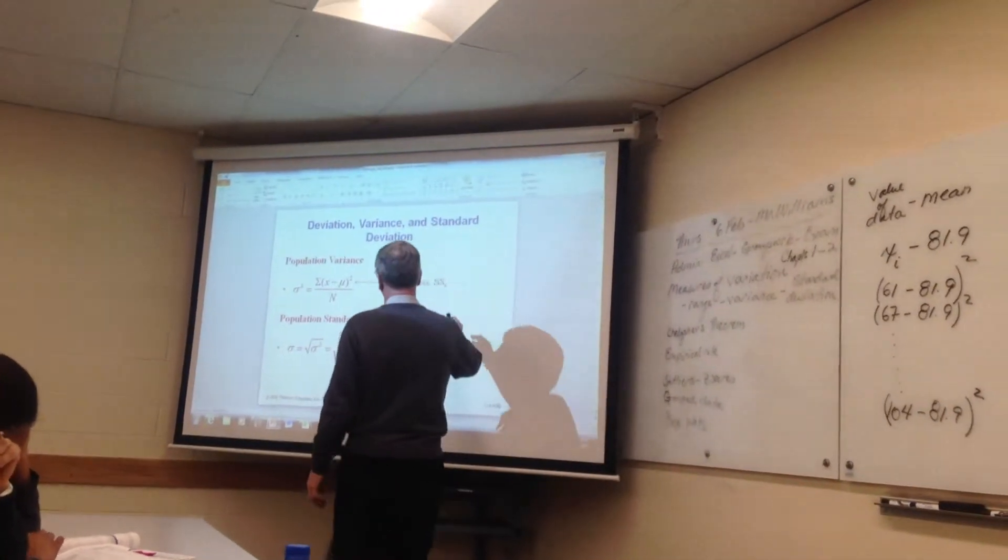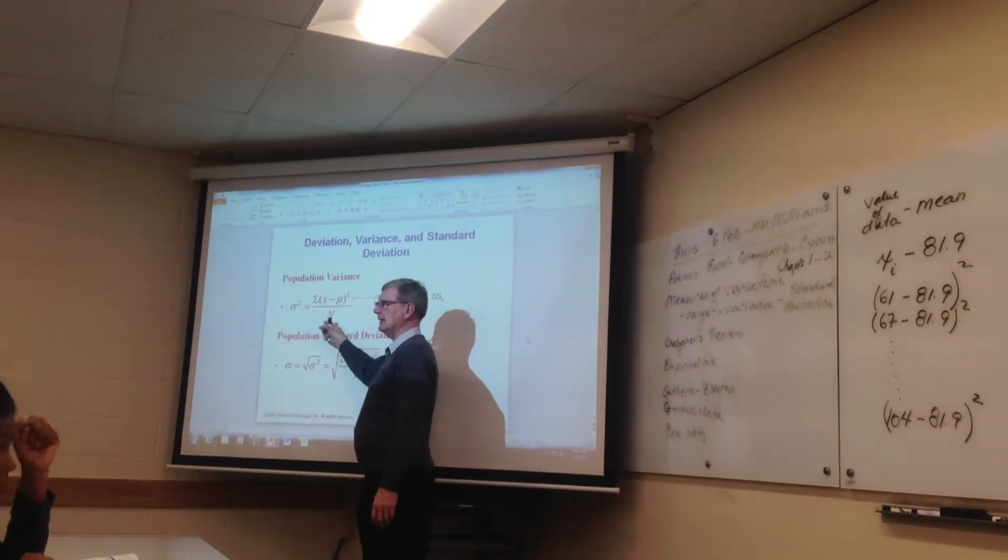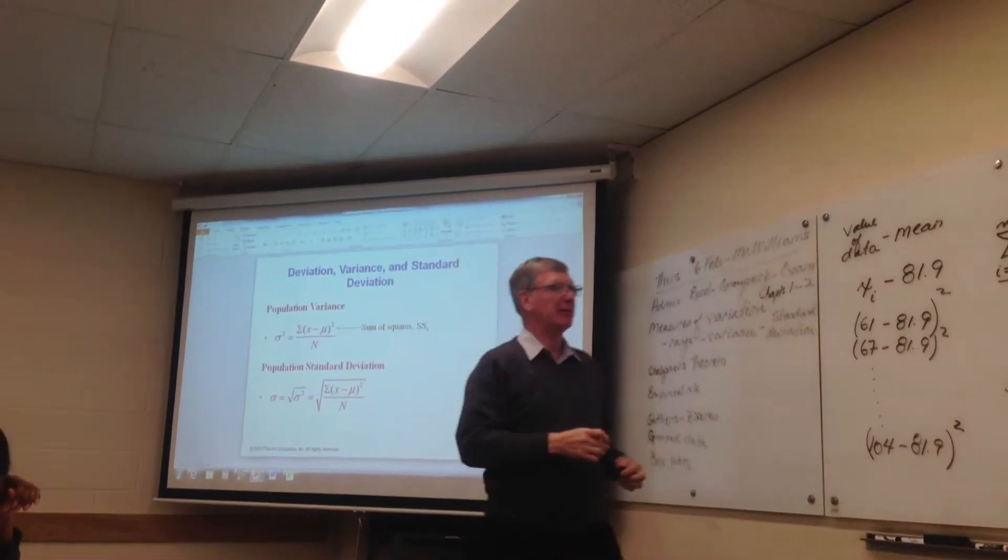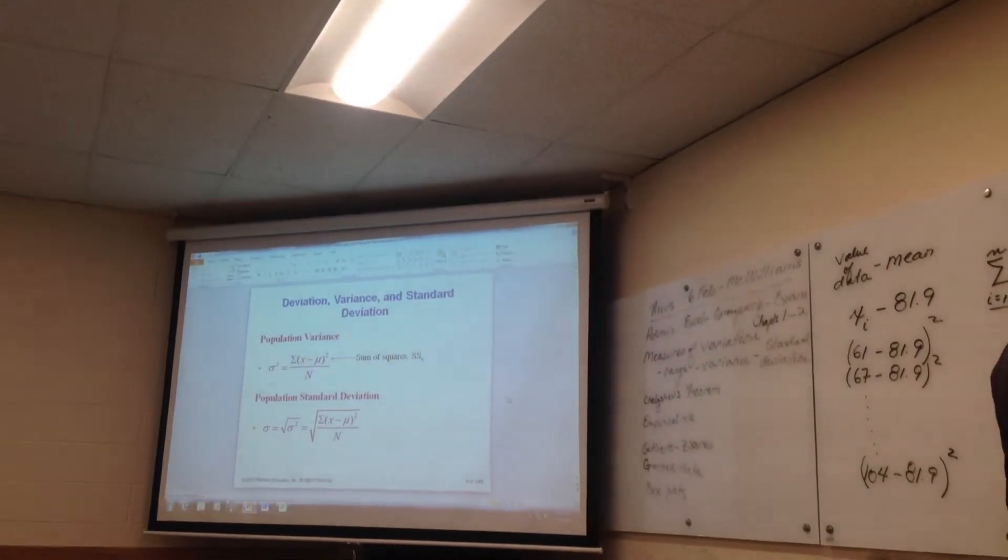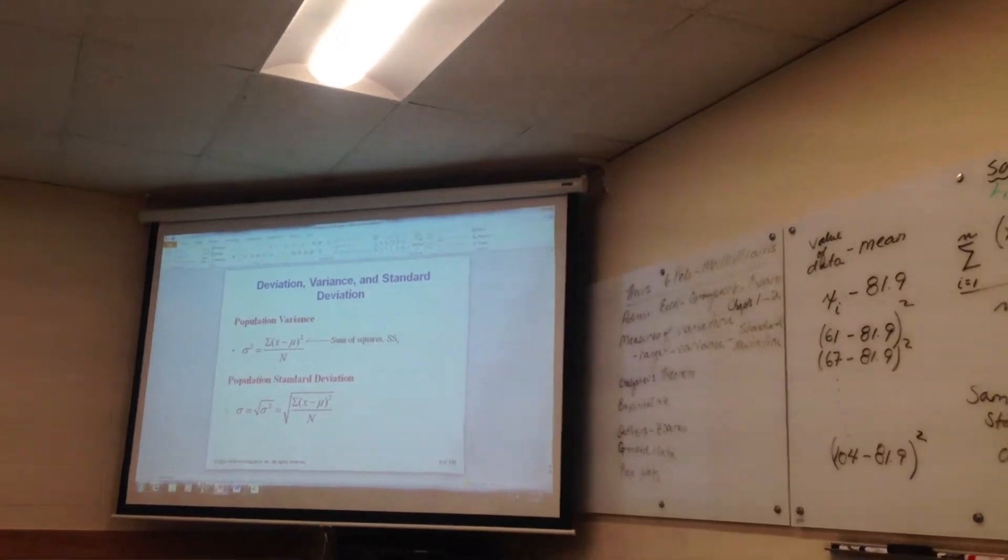If I have the whole population, there's no mystery to what happened. I divide by this number, I divide by n. And the symbol for the population variance is this Greek letter, sigma. And this is the sum of the squares.